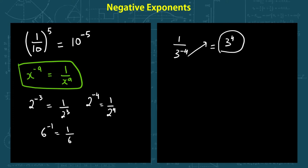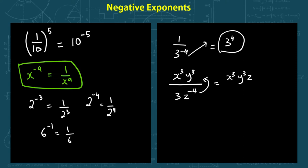Let's work one example and you will see how this makes everything so much easier. We have x cubed y cubed over 3 into z to the power of negative 4. Now let's get rid of this negative exponent — all we have to do is bring it up, which gives us x cubed y cubed z to the power of 4, all over 3.